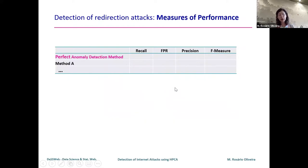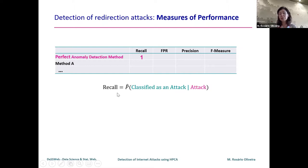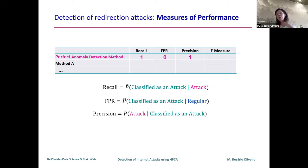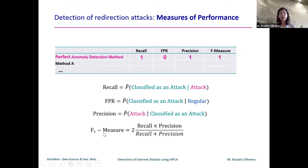To compare methods, we use four measurements: recall — the estimated probability that an observation that is an attack is correctly assigned as an attack; false positive rate — the probability that a regular observation is wrongly assigned as an attack, with optimal value zero; precision — given it is classified as an attack, the probability it truly is an attack; and the F1 measure, the harmonic mean of recall and precision.